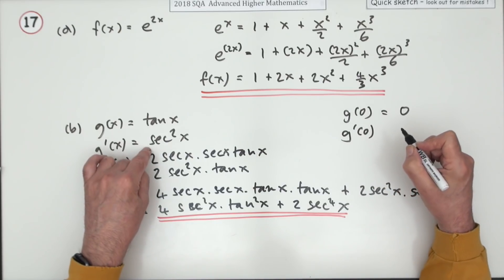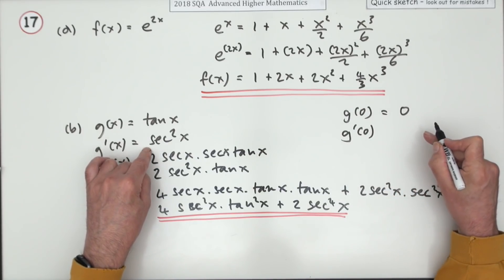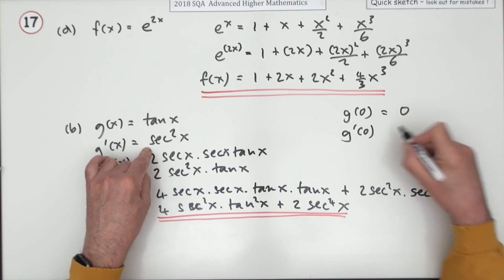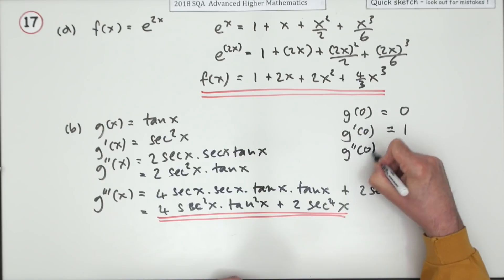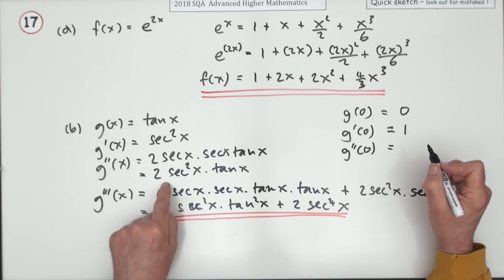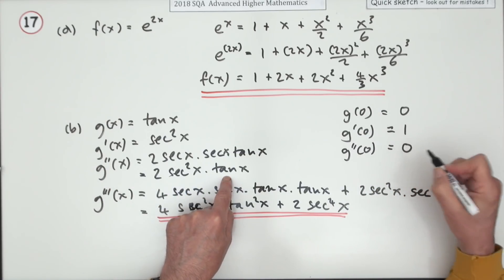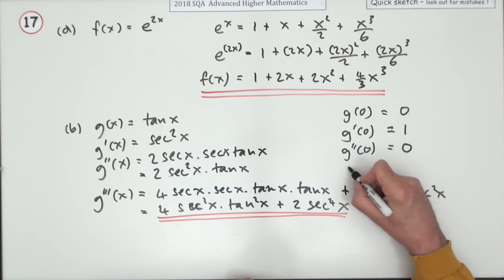The first derivative. Well sec is one over cos. Cos of zero is one, so one over one is still one, and square it and it's still one. Next derivative. Well that's a product with a tan, so good, that goes. That's times zero so the whole thing's zero.